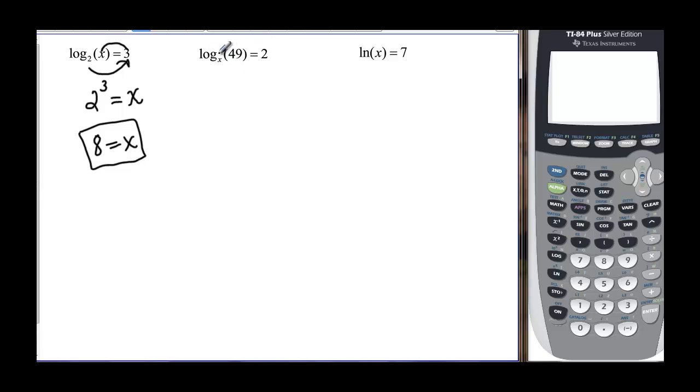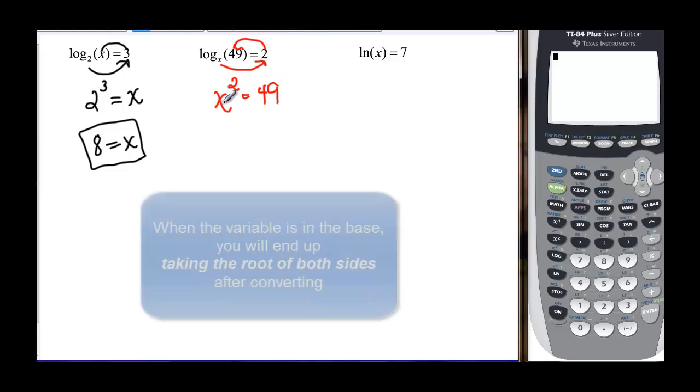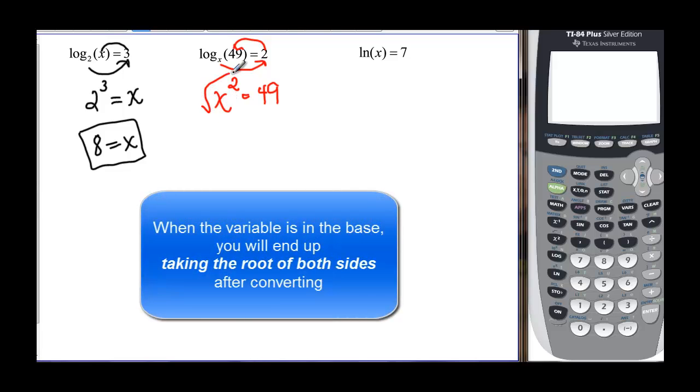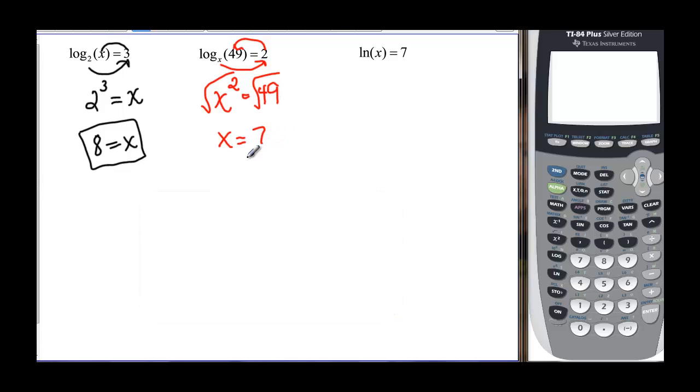In the second equation, sometimes your base is your unknown. So we still do the same thing. We start with our base, hop across the equal sign to grab the exponent, and then hop back to find out what it's equal to. And when your base is your unknown, well then that's when we want to take the root of both sides. So x then would be equal to seven. And remember, it's not negative seven because again, the base has to be greater than zero. We talked about that earlier. So it's only going to be positive seven.